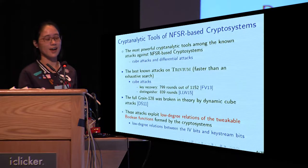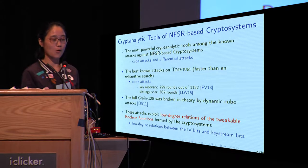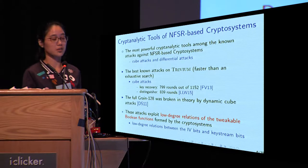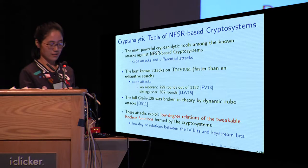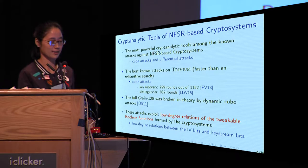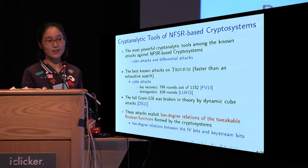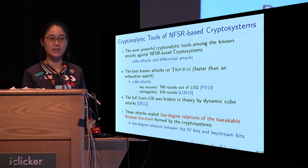Cube attacks and higher order differential attacks are most powerful against NFSR-based cryptosystems. The best known key recovery attack on Trivium uses cube attacks and reaches 799 rounds. The best known distinguisher on Trivium covers 839 rounds. The Grain-128 was broken by dynamic cube attacks. These attacks exploit low degree relations of the tweakable Boolean functions — that is, the low degree value relations between the IV base and the keystream base.